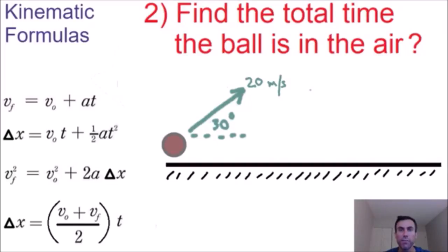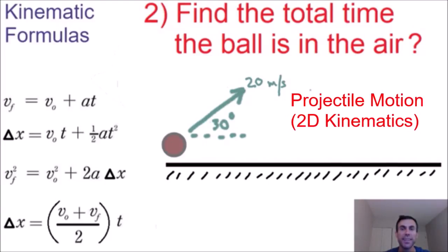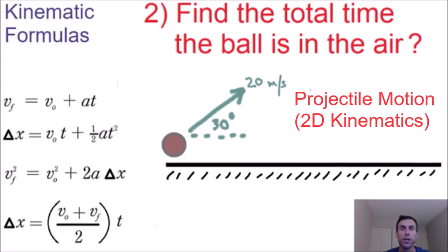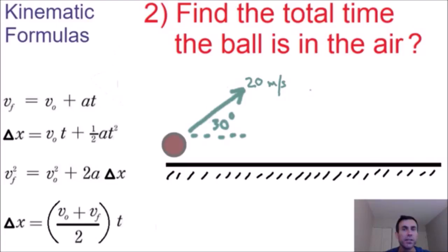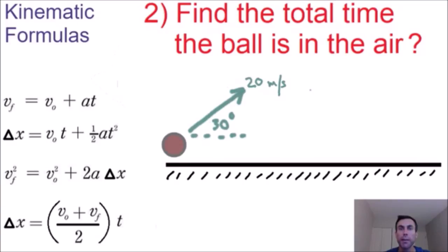Welcome to another one of my physics videos. In this video we'll be talking about projectile motion, or kinematics in two dimensions. In this example we have a ball that's being launched at 20 meters per second at an angle of 30 degrees with the ground, and we need to find the total time that the ball is in the air.